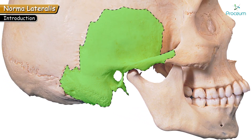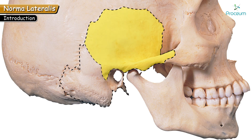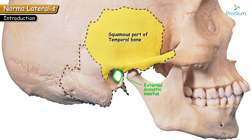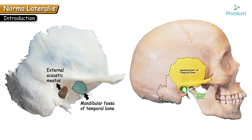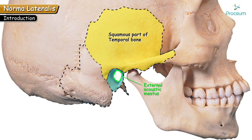Let's see the parts of the temporal bone visible in this view. The first is the squamous part. Just below the squamous, the opening present is known as the external acoustic meatus, also known as the external auditory meatus. This opening is the opening of the external ear and is present behind the mandibular fossa. The next small part of the temporal bone is the tympanic part, which surrounds the external acoustic meatus. It is a curved plate-like bone surrounding the external auditory meatus.